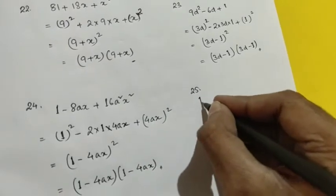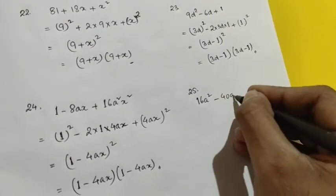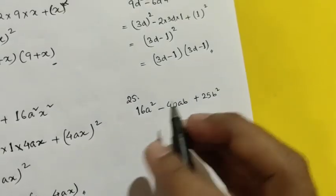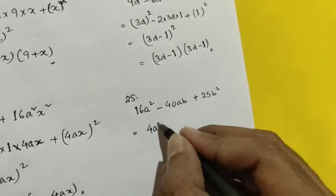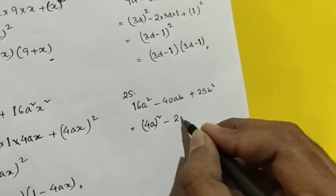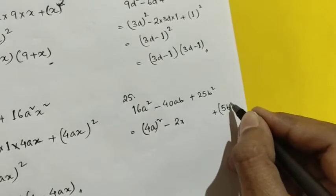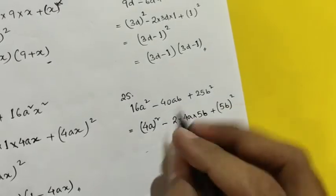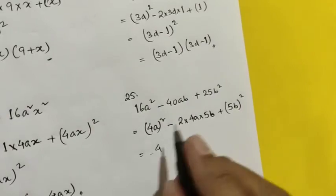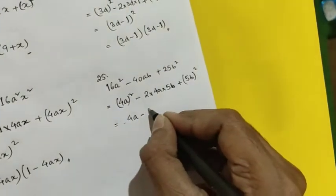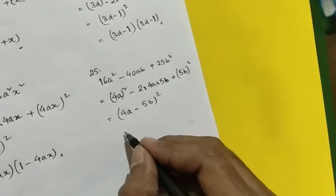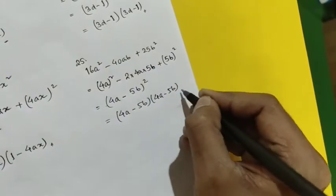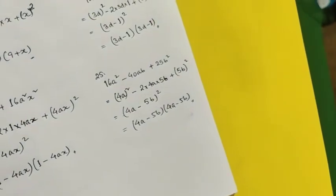Question number 25 is 16a² - 40ab + 25b². Here 16a² can be written as (4a)², and 25b² can be written as (5b)². The middle term is minus 2 into 4a into 5b. In place of a we have 4a, and in place of b we have 5b. So this equals (4a - 5b)², which in product form is (4a - 5b)(4a - 5b). This is how you factorize it.